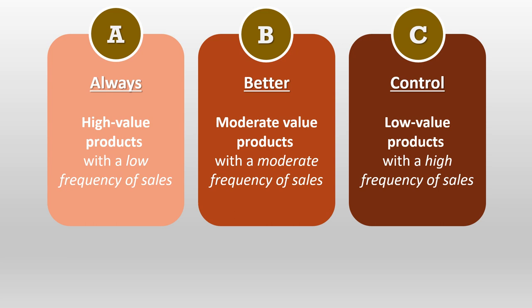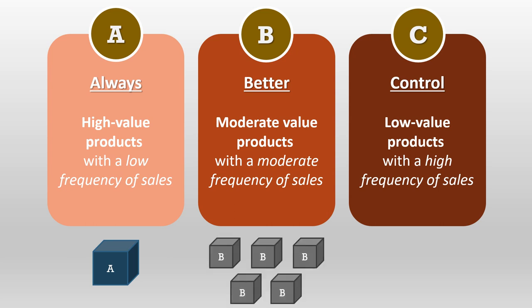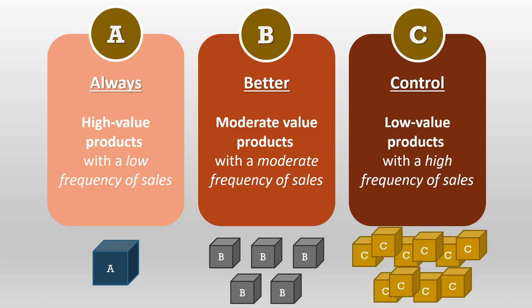Suppose highly costly drugs are required at a very low frequency — they are purchased in small quantities, but a major portion of the budget goes into procuring these Category A drugs. Moderate-value products have moderate frequency of sales, so a moderate budget is allocated to purchase Category B drugs. Category C drugs are required at high frequency but are of low price, so we purchase larger amounts of such drugs. In this way, we can control our inventory — products required in high quantity are purchased in high quantity through A, B, C categorization.